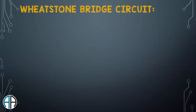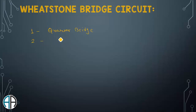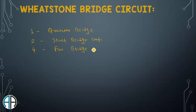Now we will study the Wheatstone bridge circuits used for strain measurement. There are basically three variants: if only one strain gauge is used, this configuration is called a quarter bridge; if two strain gauges are used, it is called a half bridge; and if all four active strain gauges are used on all four arms of the Wheatstone bridge, it is called a full bridge configuration. In this session we will cover a short introduction, and in the next video we will elaborate on each configuration.